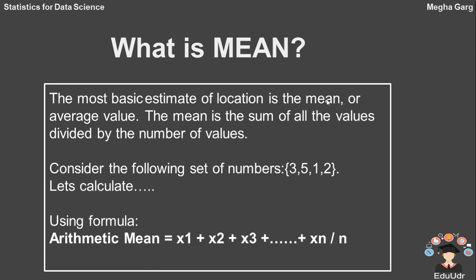So, our first slide is what is mean? The most basic estimate of location is the mean or the average value. The mean is the sum of values divided by the number of values. Consider the following data set. We have four observations in our data set: 3, 5, 1 and 2. And our calculated mean is 2.75.